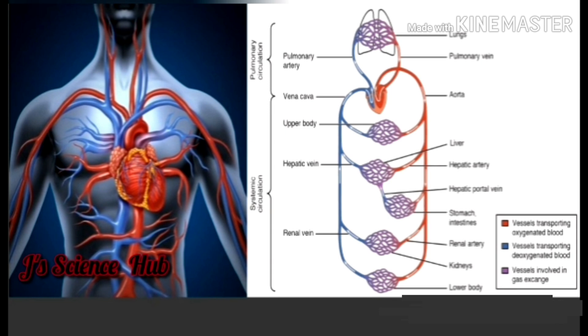Later, the right ventricle starts to contract. It pushes the deoxygenated blood, which flows into the pulmonary artery that goes to the lungs for purification. Like this, the heart continues its cyclic function.